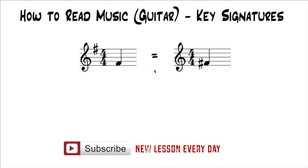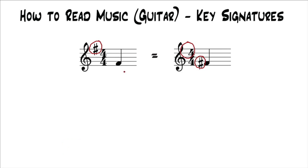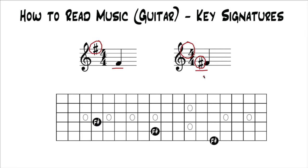So these two notes are the same. This isn't showing a key signature, but it's using an accidental in front of this F, which makes it an F sharp. This is showing a key signature saying that all Fs in this piece, unless otherwise notated, are F sharps. So these two notes are the exact same note. So if they're on your fretboard, they would land right there.